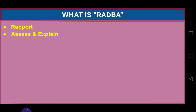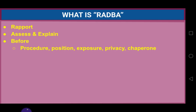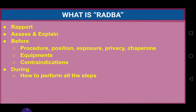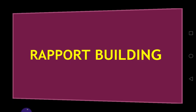B stands for Before — before starting the examination, you need to explain the procedure, steps involved, what position and exposure is required, and you have to offer privacy and chaperone. You also need to explain what equipment we need and the contraindications to that particular examination. D stands for During — the different steps and how we perform them. A stands for After — how to finish the examination. This is the RAPDA approach for teaching stations.